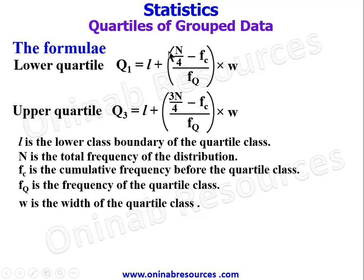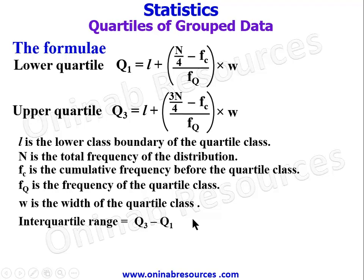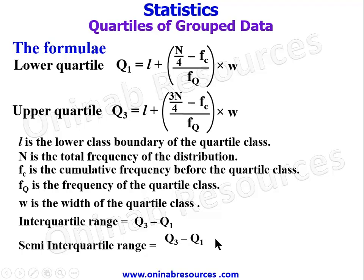Those are what the parameters in the two formulae stand for. Interquartile range is Q3 minus Q1, while the semi-interquartile range is half of interquartile range, which is (Q3 minus Q1) over 2. These are the formulae we will be using in this video.